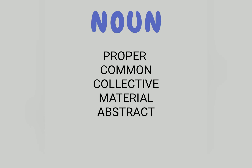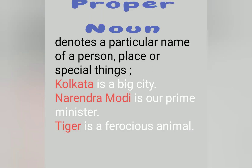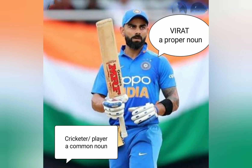Look at the picture — Virat Kohli. 'Virat' is a proper noun, and he is a cricketer player, so 'cricketer' or 'player' is a common noun. Same with the city Kolkata — 'Kolkata' is a proper noun and 'city' is a common noun.